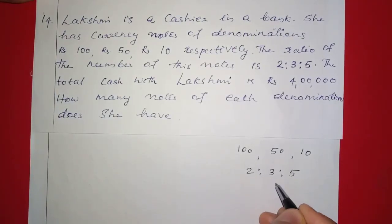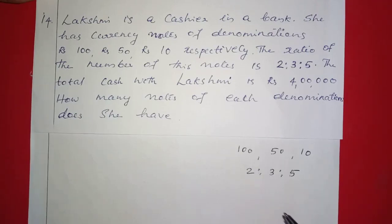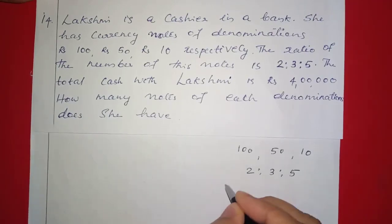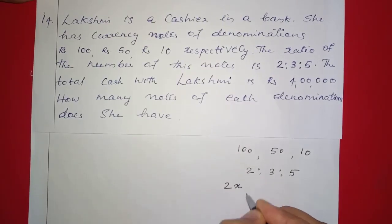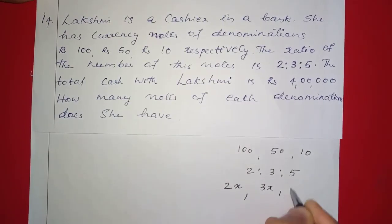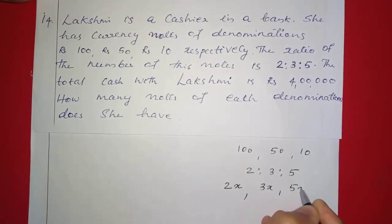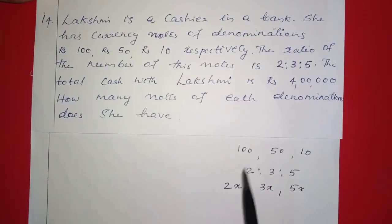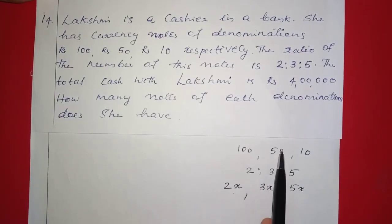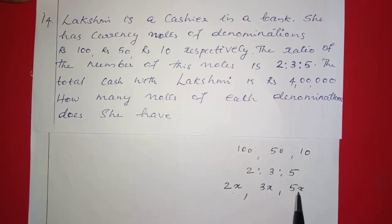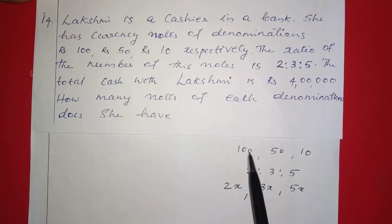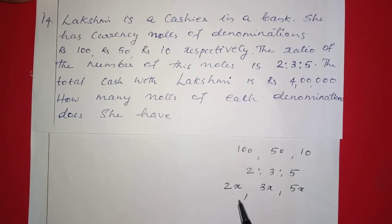If we multiply a fixed number x, we have 2x, 3x, and 5x notes. There are 2x notes of 100 rupees, 3x notes of 50 rupees, and 5x notes of 10 rupees. The total amount from 100 rupee notes is 100 into 2x.